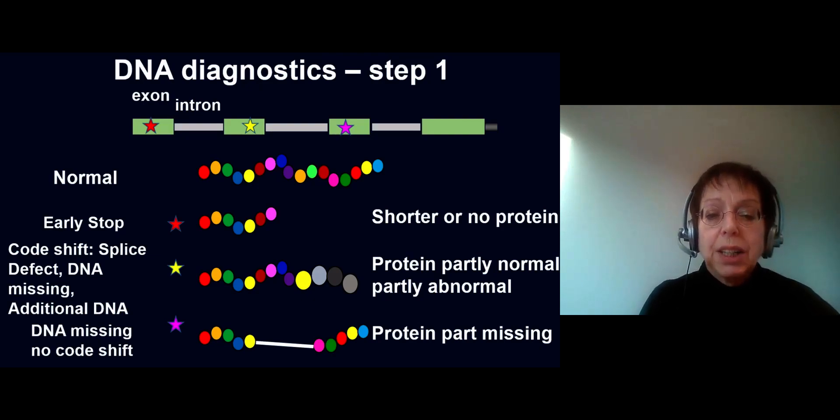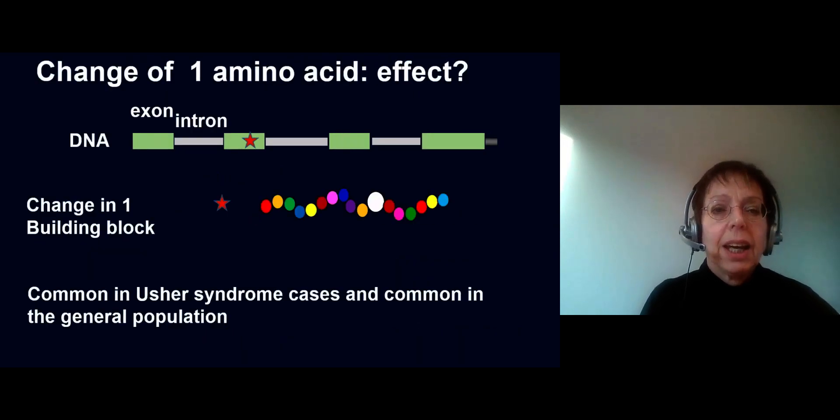Because the USH2A gene is large, we can see in the general population and in Usher syndrome cases several of these changes. When these are very rare, it's very difficult to predict whether this could be disease-causing or not. We have several ways, several things we look at to help us predict whether such a change would be deleterious for USH2A protein function or not.